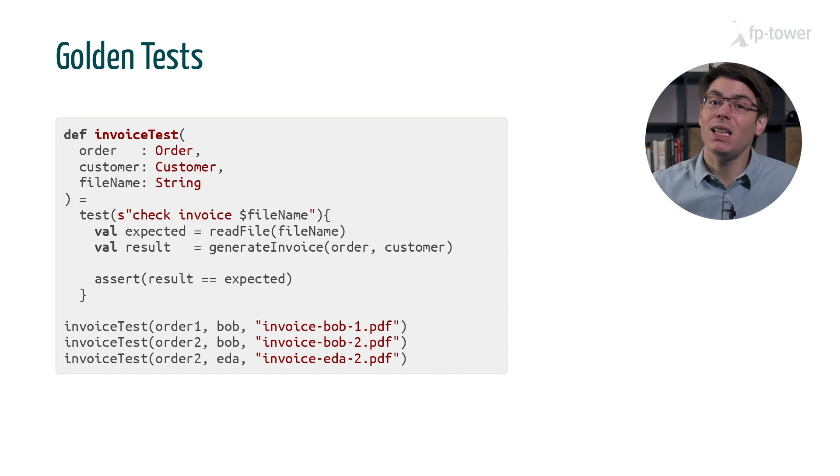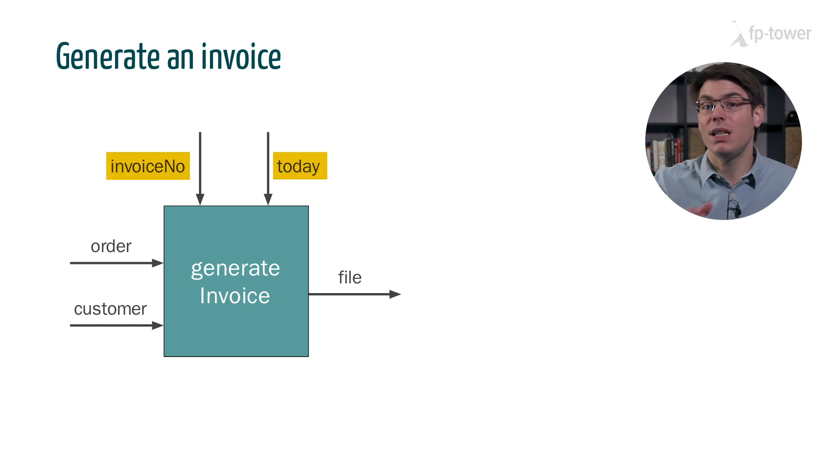However, this technique won't work here because generate invoice is not deterministic. In particular, the invoice number and today's date are not passed as inputs of the function - either they are fetched from a mutating variable or from the runtime. This means that we can't compare the result of generate invoice against a static file because every time we call this function we would expect to receive a different invoice with a different invoice number and potentially a different date.